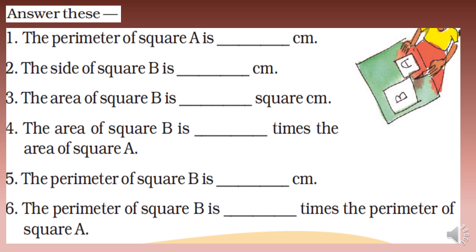Now answer the questions based on both squares. The perimeter of square A: the side is three centimeters, so perimeter equals three multiplied by four, which is twelve centimeters. The side of square B is double the side of A, so three times two equals six centimeters. The area of square B is six multiplied by six, which equals thirty-six square centimeters.